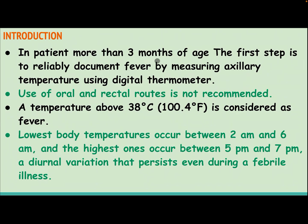In patients more than 3 months of age, the first step is to reliably document fever by measuring axillary temperature using a digital thermometer. Use of oral and rectal routes is not recommended. Temperature above 38°C is considered fever. Lowest body temperature occurs between 2 a.m. and 6 a.m., and highest between 5 p.m. and 7 p.m., a diurnal variation that persists even during febrile illness.